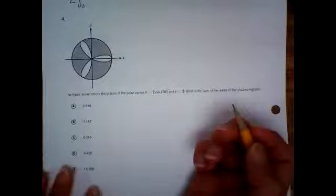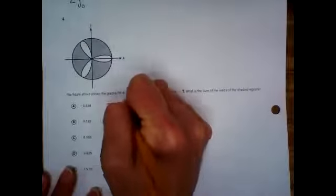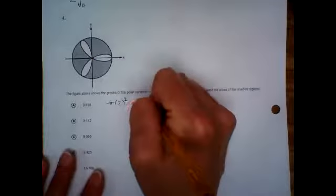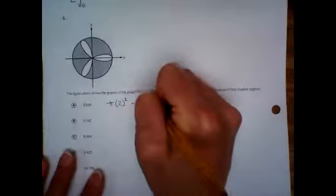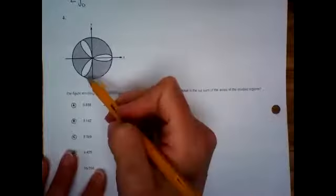We're going to do the whole circle. A whole circle is pi r squared, and the radius is two, so it'll be pi times two squared or four pi. Then we want to subtract out the area of this polar graph. It's tempting to go zero to two pi, but with this three in there, that is going to change that.